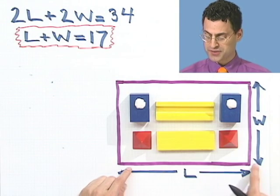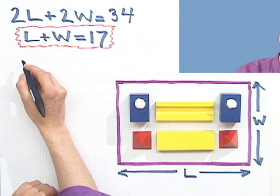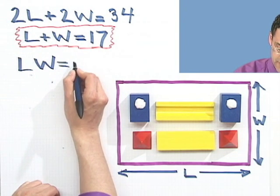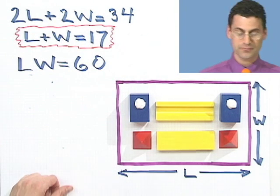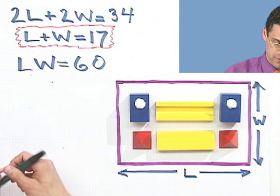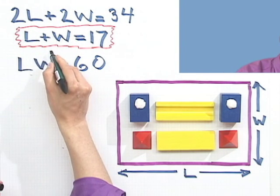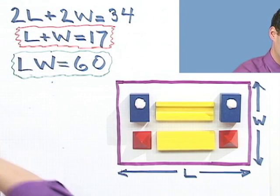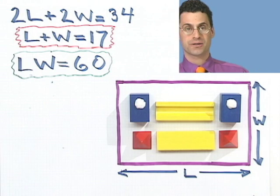And what else are we told? We're also told that the area, the area of this dorm room is 60 square feet. And how do you compute area? Well, area is base times height. Right? So that would be L times W would equal 60. So we know that L times W equals 60. Okay? So those are the two facts that were given. In fact, maybe I should, to be fair, mark this. These are the two facts that I've just weaned, gleaned, gleaned from the question. Okay.